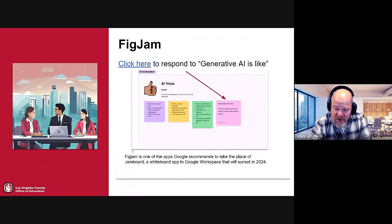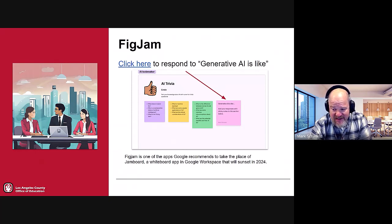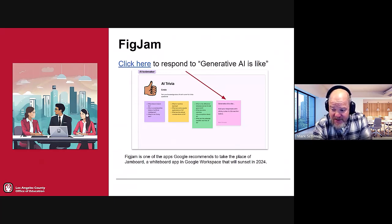Google is recommending FigJam and others to replace Jamboard. Jamboard, if you haven't heard, is going to end its life this year in the fall. It's been a fun and exciting but basic collaborative whiteboarding tool in Google Workspace. FigJam is one of the ones they recommend.